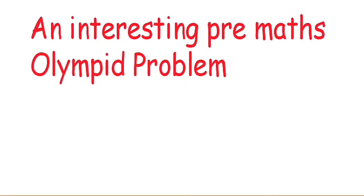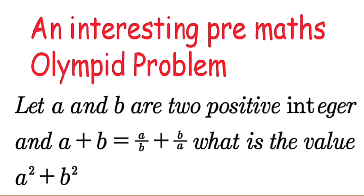Welcome to everybody. Let's have a pre-mathematical Olympiad problem — an interesting pre-math Olympiad problem. That is: let a and b be two positive integers and a plus b is equal to a over b plus b over a. What is the value of a squared plus b squared?